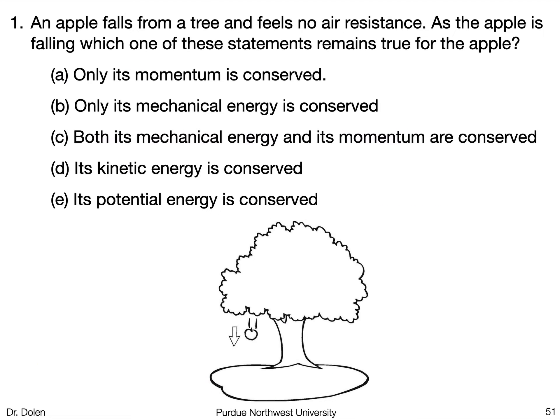Let's go through one more quick example. An apple falls from a tree and feels no air resistance. As the apple is falling, which of these statements remains true for the apple? A: only its momentum is conserved. B: only its mechanical energy is conserved. C: both mechanical energy and momentum are conserved. D: kinetic energy is conserved. E: potential energy is conserved. Pause the video, think about this for a few seconds, and when you unpause I'll move to the next slide.